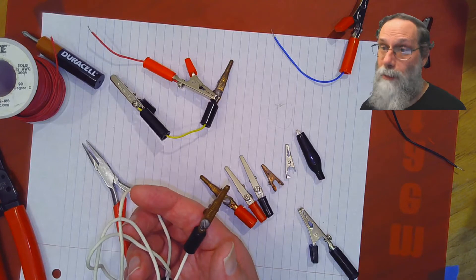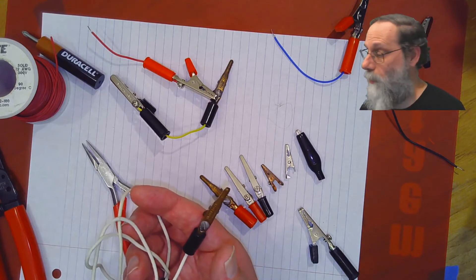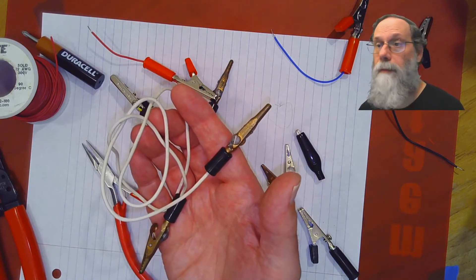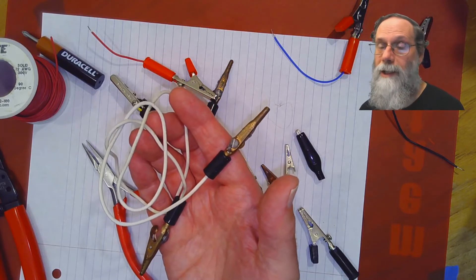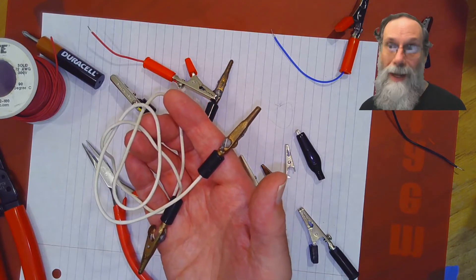You definitely don't want your breadboard getting very close to your water, so you want to have a reasonably long wire to separate the two and keep your electronics away from your wet stuff.